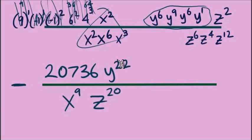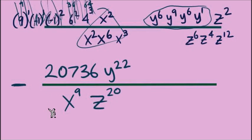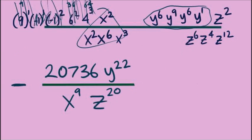All that's left is cleanup. We don't have any negative exponents, and the negative sign is fine. We have 20,736 in the numerator with no number other than 1 in the denominator, so we can't simplify the fraction. We're good — and there's our answer.